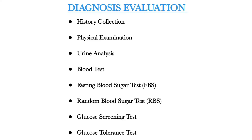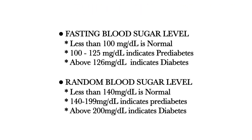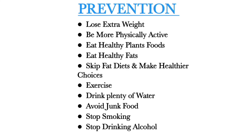The glucose tolerance test is a lab test to check how your body moves sugar from the blood into tissues like muscles and fat. For fasting blood sugar: less than 100 mg/dL is normal, 100 to 125 mg/dL indicates pre-diabetes, and above 126 mg/dL indicates diabetes. For random blood sugar: less than 140 mg/dL is normal, 140 to 199 mg/dL indicates pre-diabetes, and above 200 mg/dL indicates diabetes.